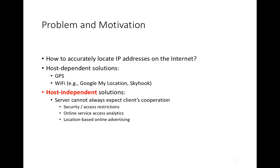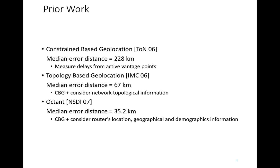We discussed prior work in the last lecture. Of note is constraint-based geolocation (CBG). The TAN 2006 paper saw that CBG gives median error distances around 228 kilometers. There's been work since then using topology-based geolocation at IMC that incorporated network topology as part of the constraints to give a median error closer to 67 kilometers. More recently, work from NSDI in the Octant system was able to produce median errors of around 35.2 kilometers. So work has been progressing in improving the accuracy of IP geolocation.